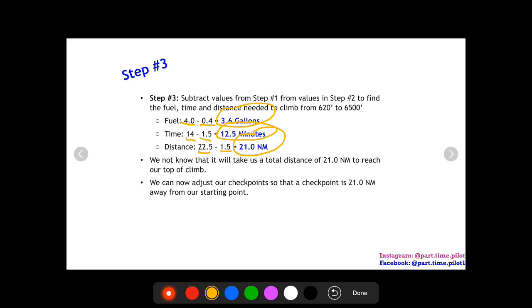But now we know our total distance it'll take to reach the top of our climb is 21 nautical miles. Okay, now we can go back to our course drawn on our iPad or our sectional chart and we can find our closest checkpoint and we can edit it slightly if we don't already have one so that it's 21 nautical miles away from our starting point.